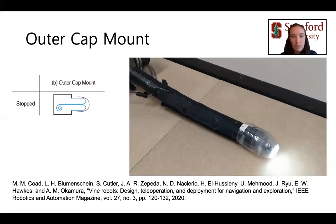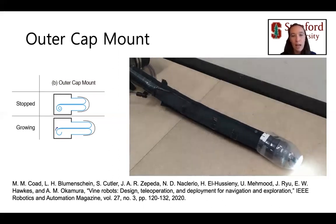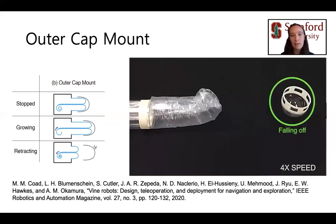The outer cap mount design places the sensor or tool on a rigid cap that fits over the outside of the robot tip and is pushed along as the robot grows. Unlike the string mount design, this mount functions at arbitrary robot lengths. However, during retraction, if any significant pulling force is applied, the cap falls off.